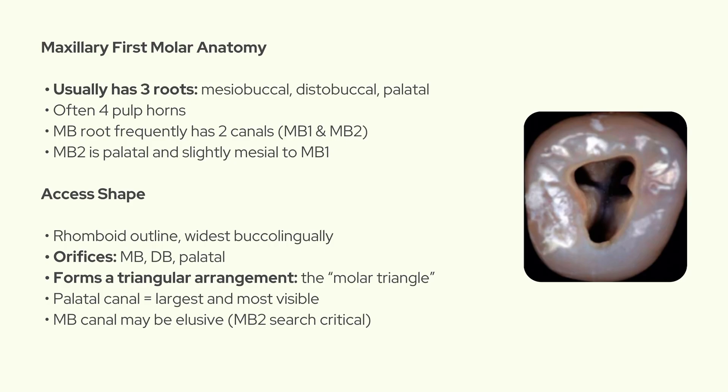We'll start with the maxillary first molar, which is one of the most complex teeth in terms of root and canal anatomy. It usually has three roots — the mesiobuccal, distobuccal, and palatal — and typically contains four pulp horns. The mesiobuccal root often has two canals, and finding that second canal, the so-called MB2, is essential. It's usually located palatal and slightly mesial to the first mesiobuccal canal.